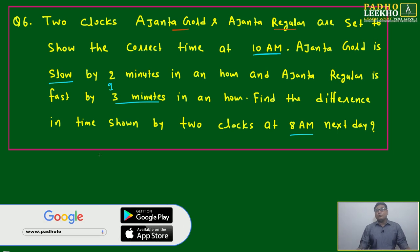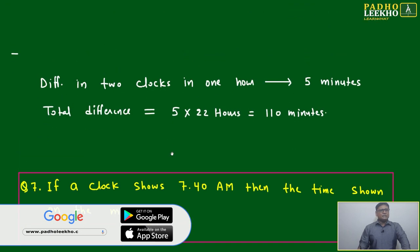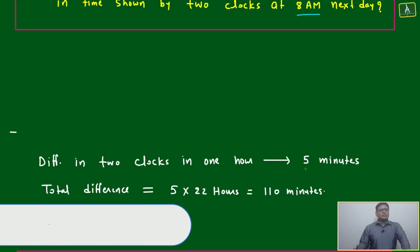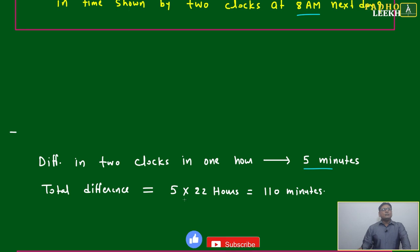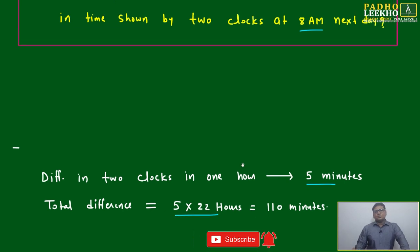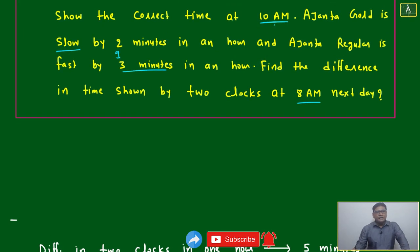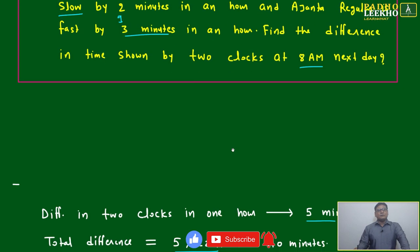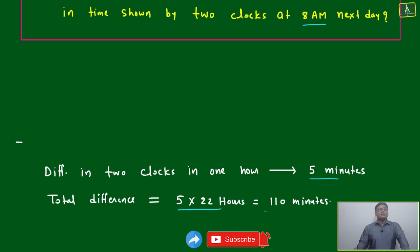Let's calculate in a simple way. Difference in two clocks in one hour is 5 minutes. Then total difference for 22 hours - it's asking 10 AM to next day 8 AM, which is 22 hours, not 24 hours - means total 110 minute difference.